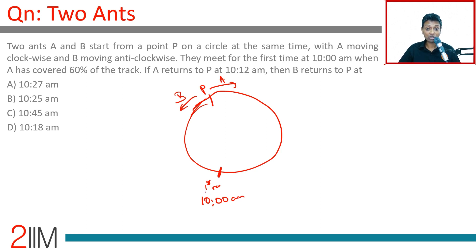If A returns to P at 10:12 AM, then B returns to P at what time? Let's think about A alone. To travel this distance, A has taken 12 minutes. This is 40% - 40% of the distance A travels in 12 minutes. The remaining 60% A should have taken 18 minutes to travel, using the ratio 60/40 × 12.